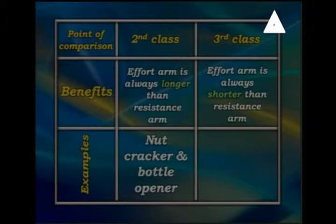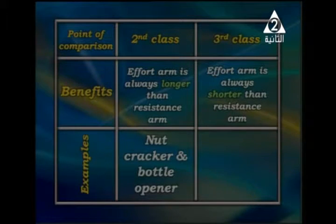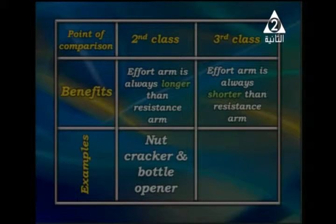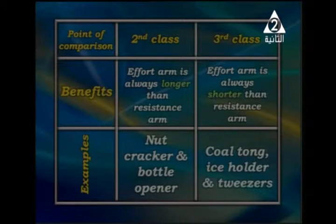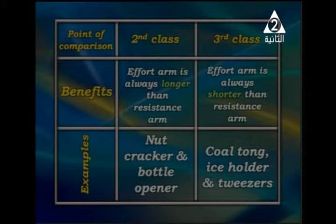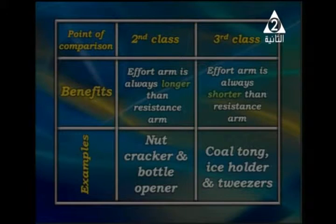For the third class lever, the effort arm is always shorter than the resistance arm — that is why it does not save effort or time. Examples of third class levers include cold tongs, ice holders, tweezers, fish tools, hockey pads, and manual brooms. They protect the body but do not save effort or time.